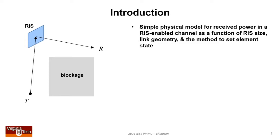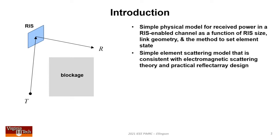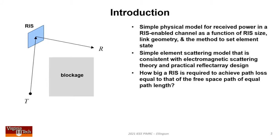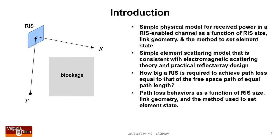There are other models available doing similar things with various advantages and disadvantages. There are three distinctions in this work: a simple element scattering model consistent with electromagnetic theory, addressing how big an RIS is required to achieve path loss equal to free space, and path loss behavior as a function of RIS size, link geometry, and element state setting method.